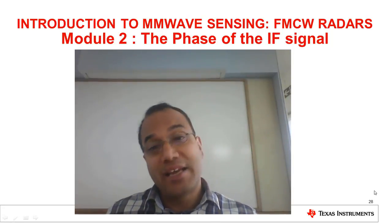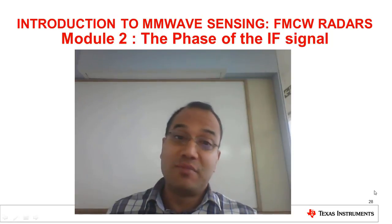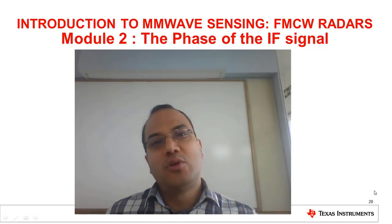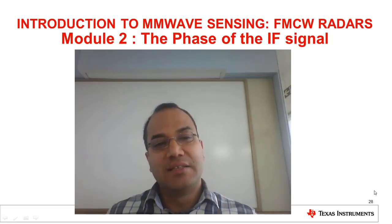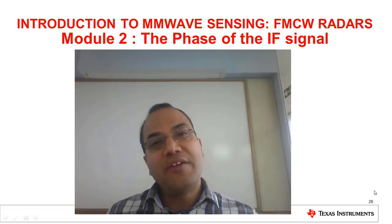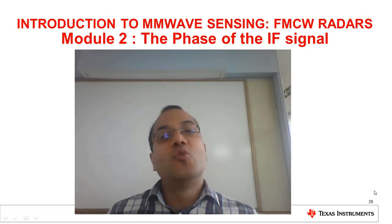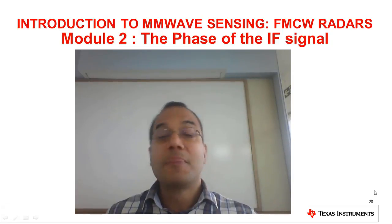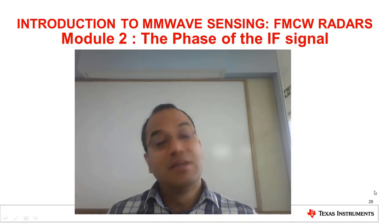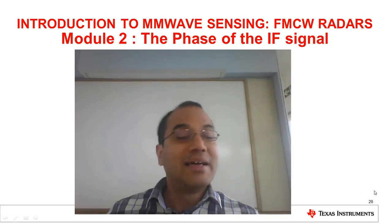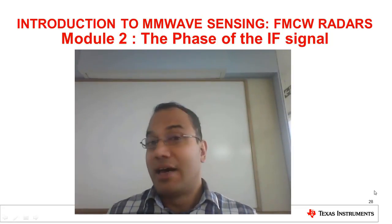Hello everybody and welcome to the second module in this introductory series on FMCW radars. In the previous module, we analyzed the frequency of the IF signal and showed that this frequency was directly proportional to the distance of an object from the radar. In this module, we will look into the phase of the IF signal. Studying the phase is very important if we wish to understand the capability of an FMCW radar to respond to very small displacements in objects. This is what enables the radar to very quickly and accurately measure the velocity of objects, and is also the foundation for applications such as heartbeat monitoring and vibration detection.